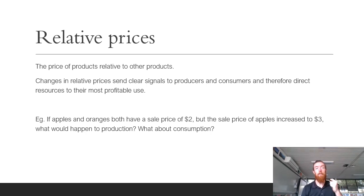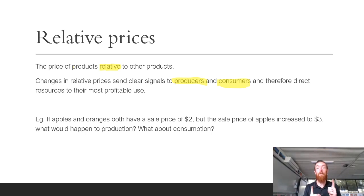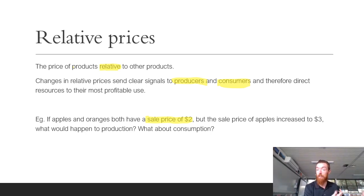Relative prices are all about the comparison of selling prices between two similar goods or services — the prices of products relative to other products. When relative prices change, it sends clear signals to producers and consumers, and therefore can change resource allocation, meaning businesses will redirect resources towards their most profitable use. For example, if apples and oranges both had a sale price of $2, it wouldn't matter which one businesses produce. But if the sale price of apples increased to $3, producers would redirect their resources into apple production because they're now more relatively profitable.